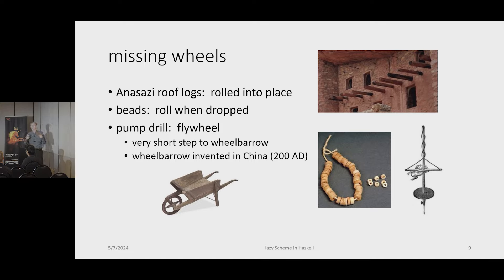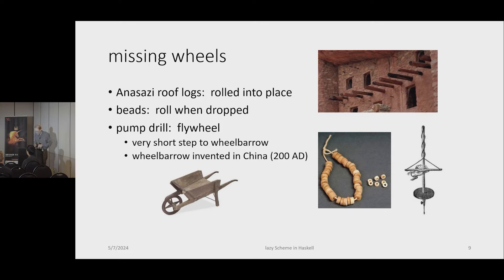As my wife and I drove here — we drove, we're going to fly back, kind of made a vacation out of it — I have an interest in archaeology. I find it interesting that the Anasazi had wheels staring them in the face but never figured it out. They rolled logs into place but never invented the wheel. They made beads that must have rolled — they had a wheel staring them in the face. They invented the pump drill, which even the Inca didn't have, and it has a flywheel on it. But it would be the Chinese who ultimately turned that flywheel into a wheelbarrow, in 200 AD. I wonder how history would have been different if they had figured out the wheel — and I wonder if there are wheels staring us in the face that we are missing too.